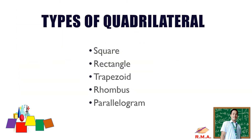We have different types of quadrilateral. We have square, rectangle, trapezoid, rhombus, and parallelogram.